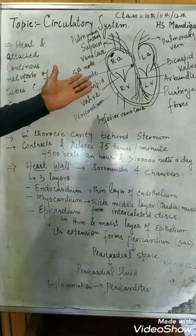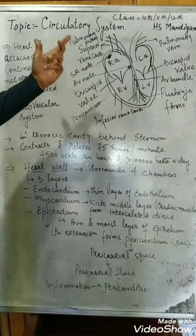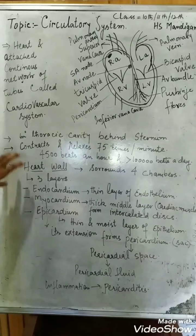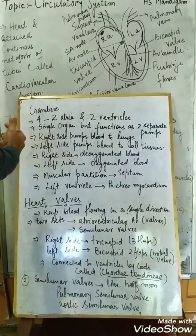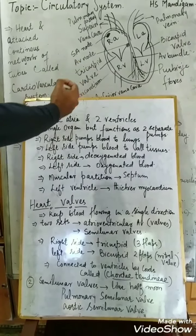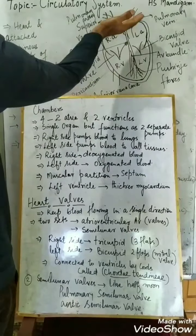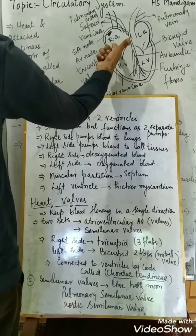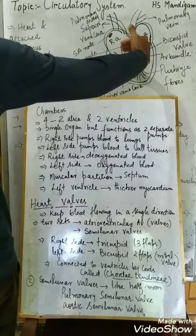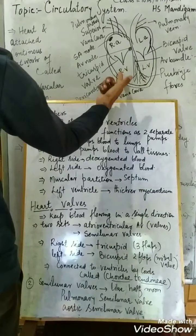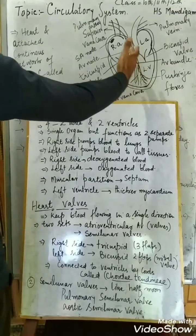Any inflammation of the pericardium gives rise to an abnormal condition that does not let the heart function normally and usually requires medical attention. Now, there are four separate chambers in our heart. The upper two chambers are called the atria — the right atrium and the left atrium — and they are also called auricles.